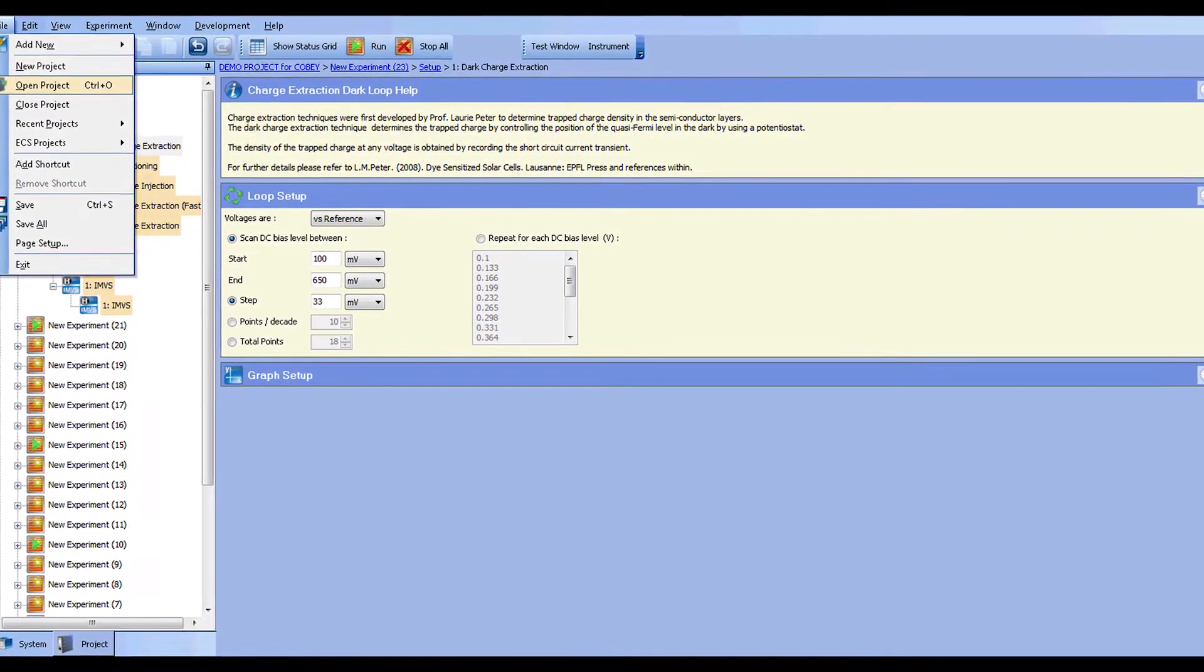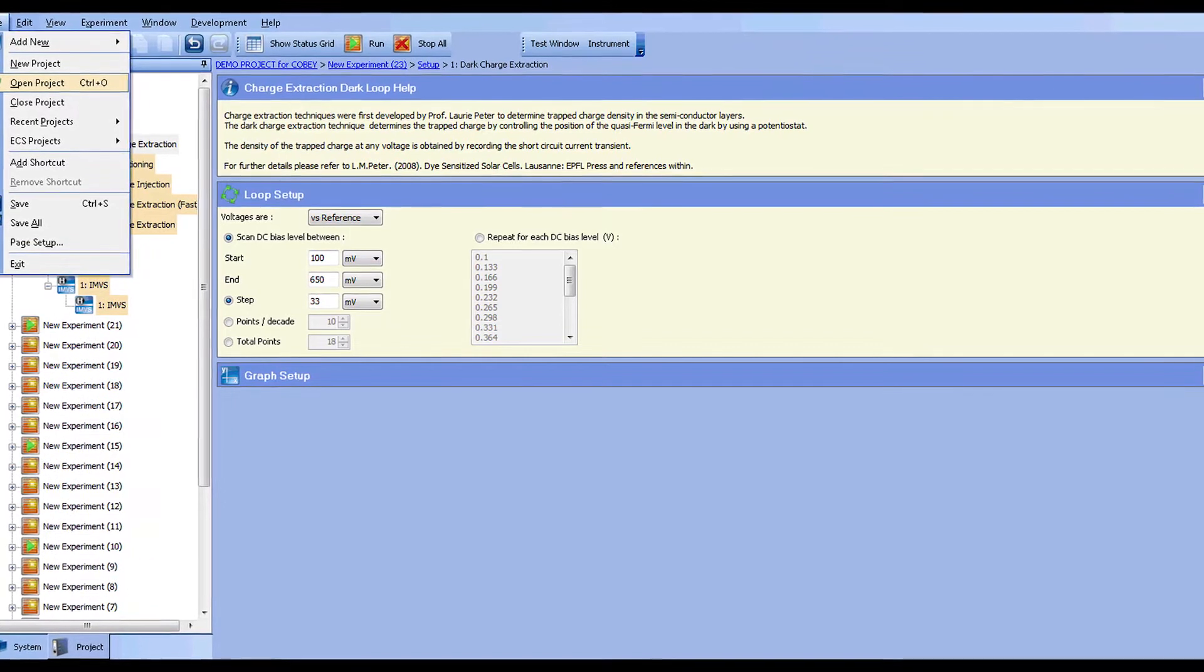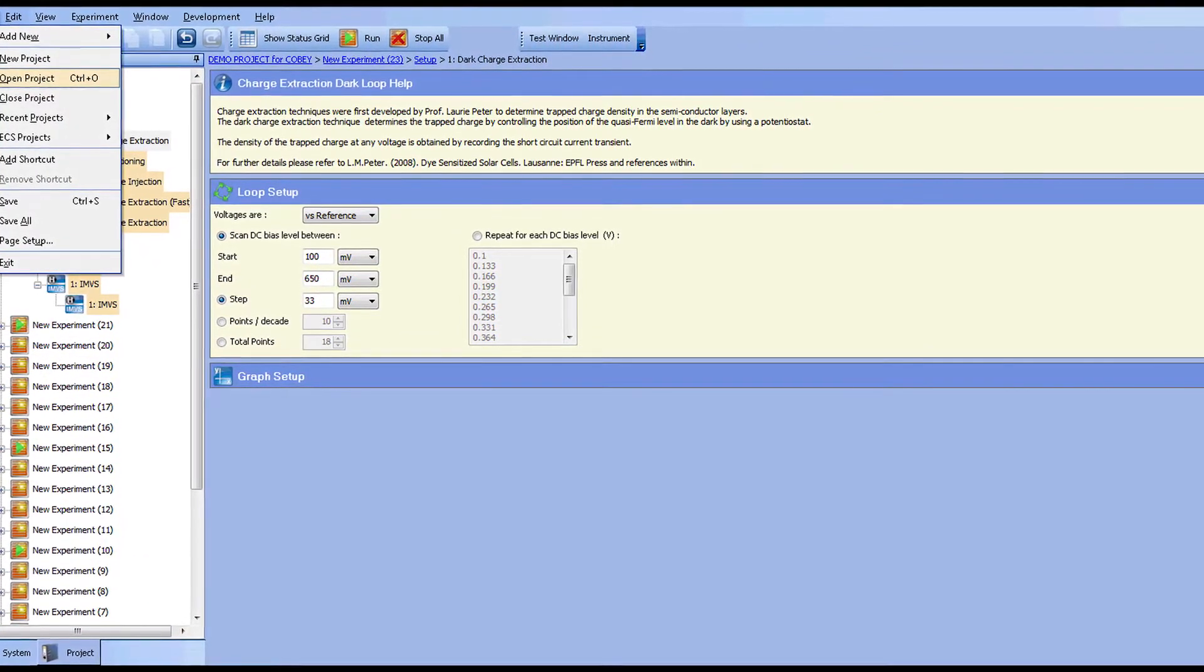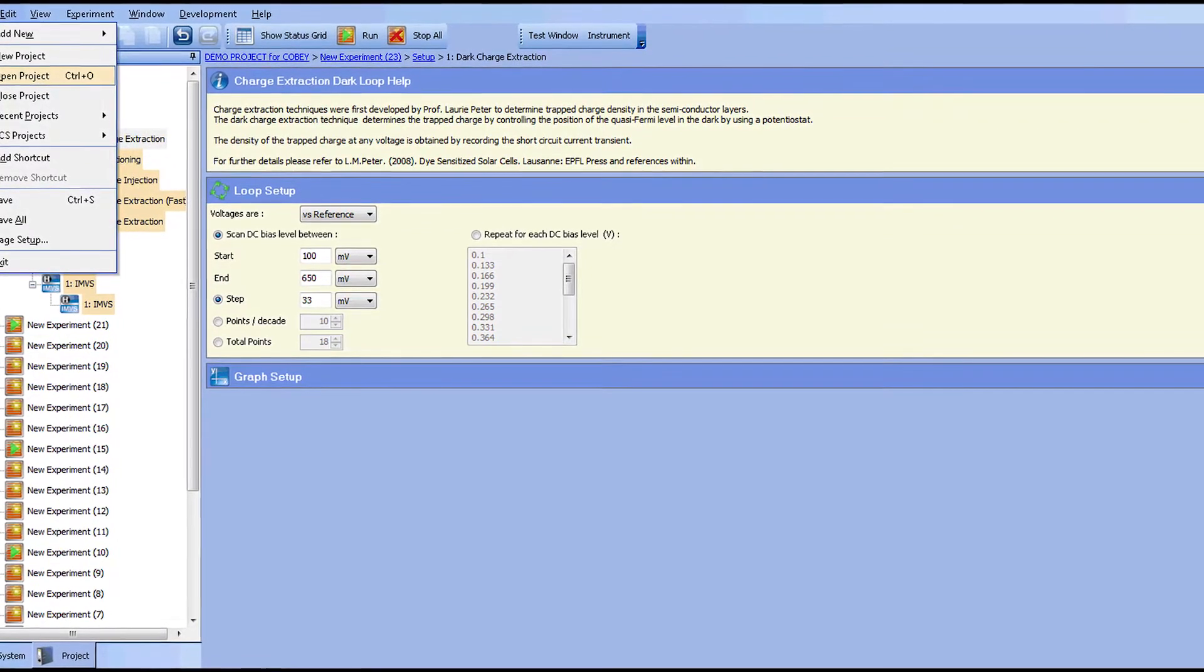For the experienced user, the Modulab XM Photo electrochemical system offers the ability to build and develop new experiment types with a powerful step sequencer.